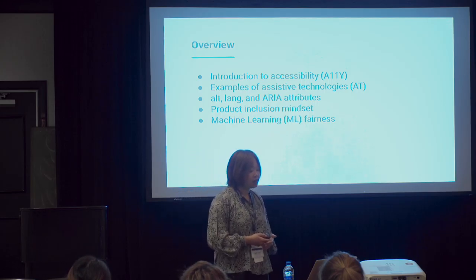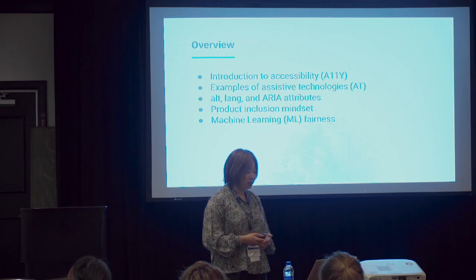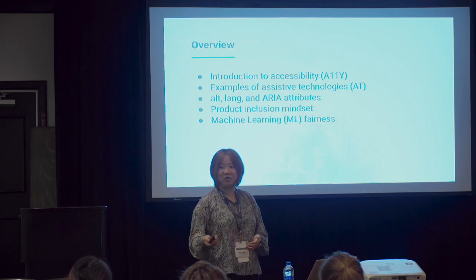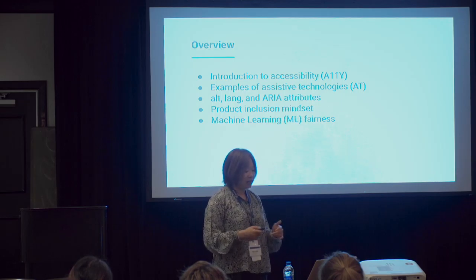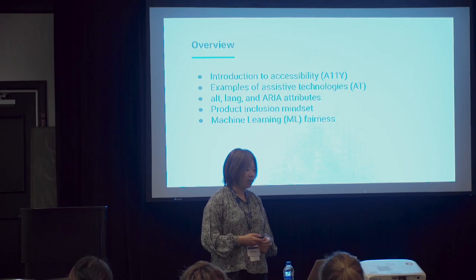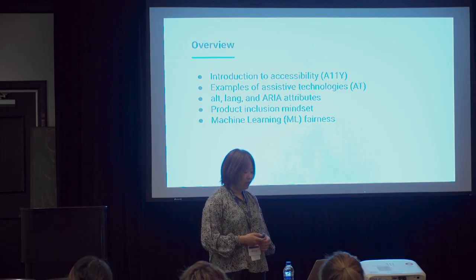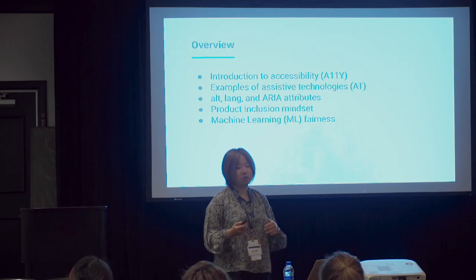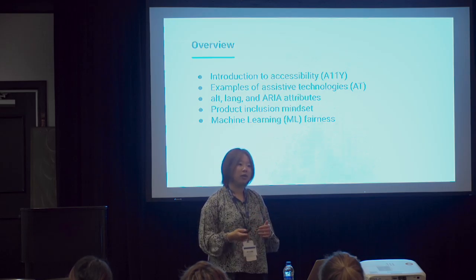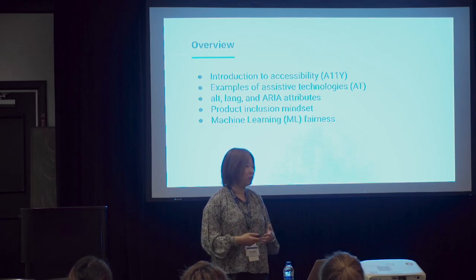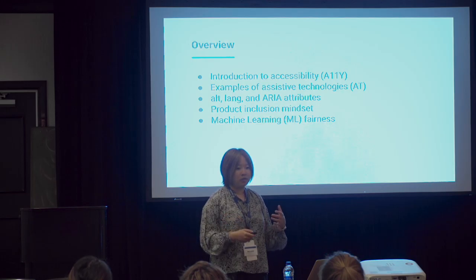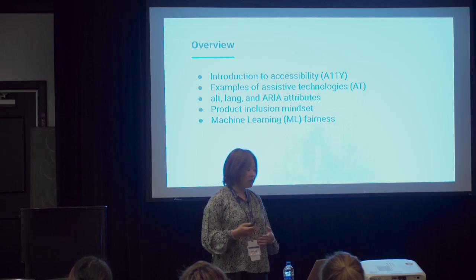In order to help you avoid that same journey, today I'll cover an introduction to accessibility, examples of assistive technology, the importance of alt tags and aria labels, and a product inclusion mindset. Gradually, as we have more data and connectivity to other products and APIs, we need to keep in mind what can potentially impact your product — including machine learning and artificial intelligence.